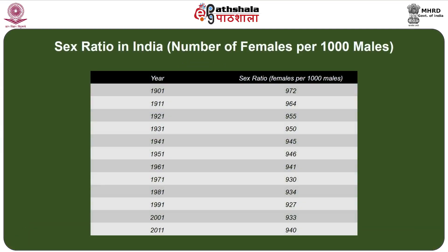The sex ratio was as high as 972 in 1901, came down to 964 in 1911, and 955 in 1921, with a reduction every decade. The reduction reached a very high low of 930 in 1971, slightly increased to 934 in 1981, but came down again to 927 in 1991. From 2001 census onwards, there is positivity in the sex ratio, which increased from 933 in 2001 to 940 in 2011.